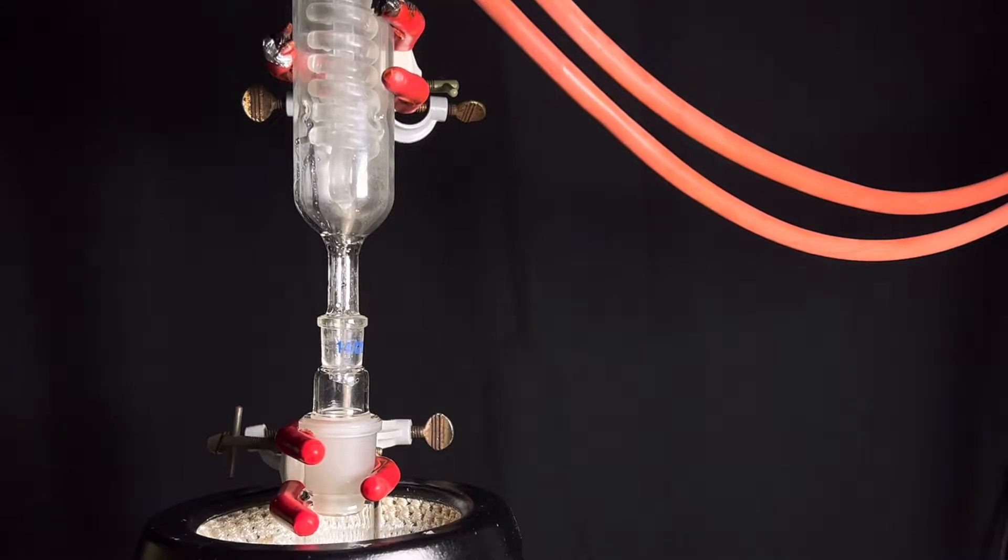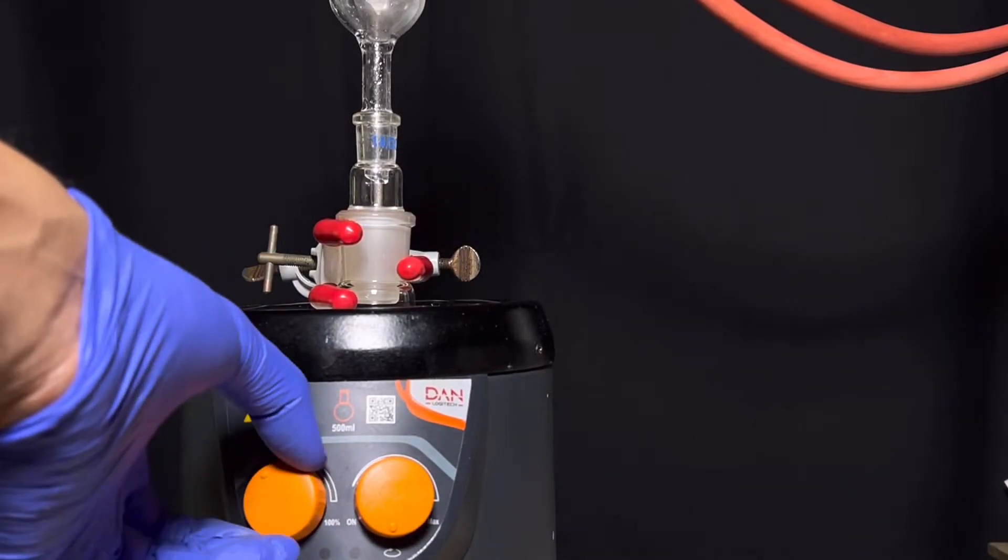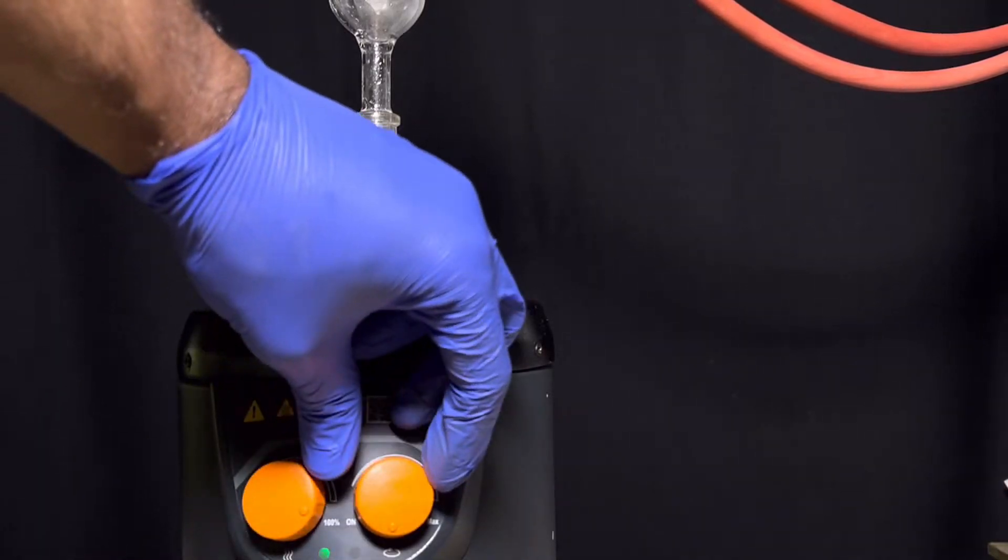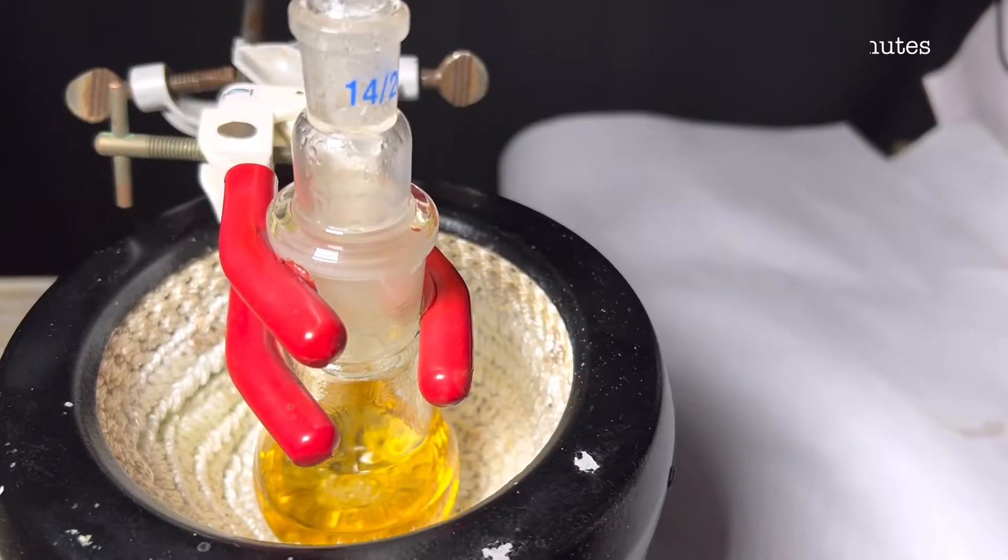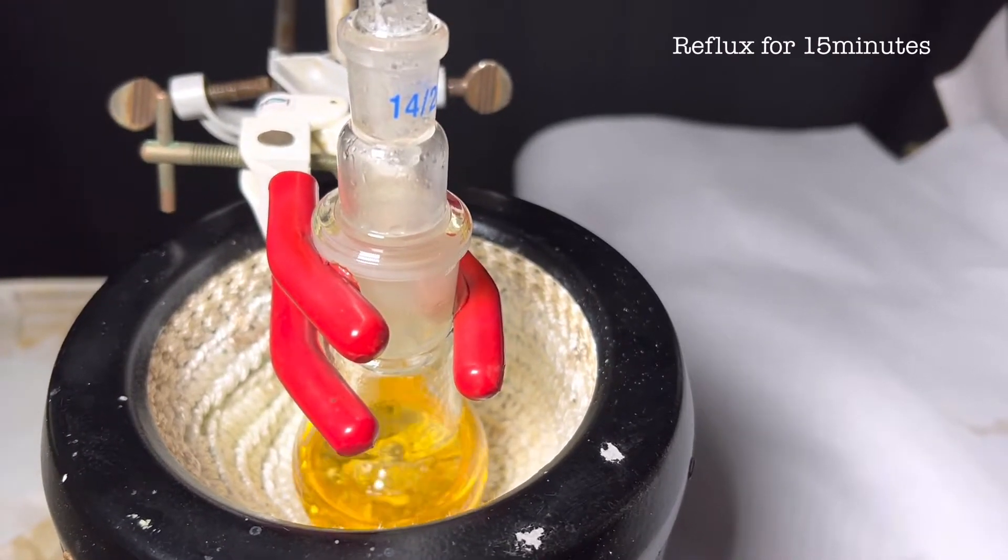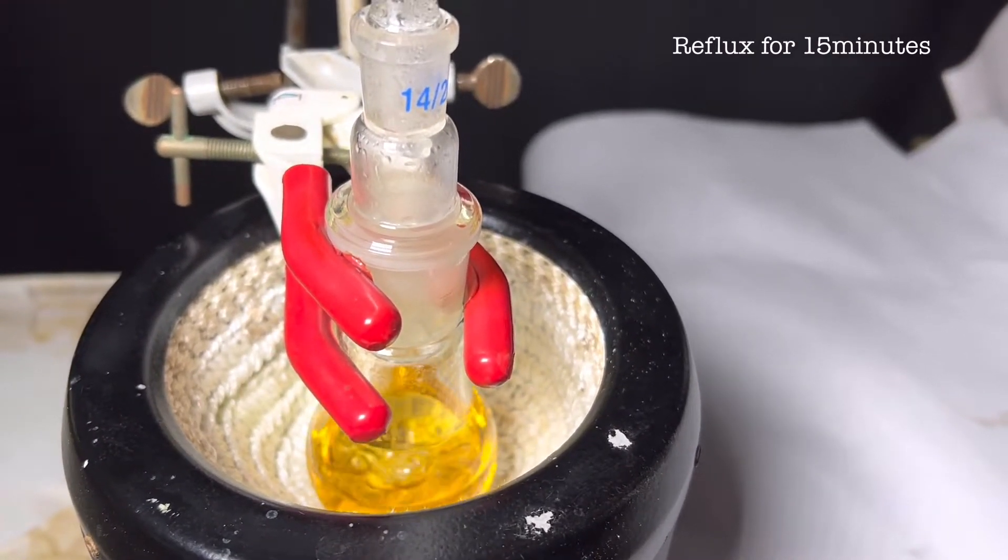The flask was placed inside a heating mantle and was equipped with a dimroth condenser. Cold water was circulated through the condenser. Heating and stirring was turned on and the reaction mixture was gently refluxed for 15 minutes. The reaction that is occurring is shown on the screen.